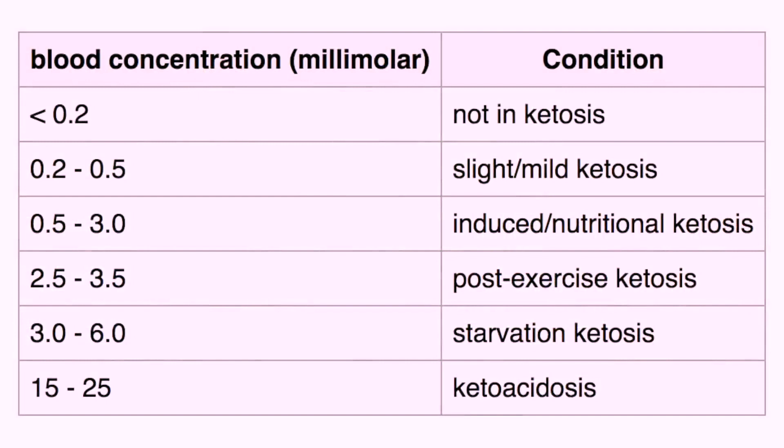Nutritional ketosis is defined by achieving and sustaining a level of blood ketones. When people say they've done the ketogenic diet and it worked or didn't work for them, I would ask: did you measure blood ketones? Did you confirm that you achieved a state of ketosis defined as an elevation of blood ketones above 0.5 millimolar? Ideally, you want to stay between 1 and 3 millimolar of ketones.